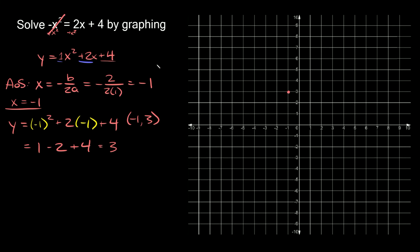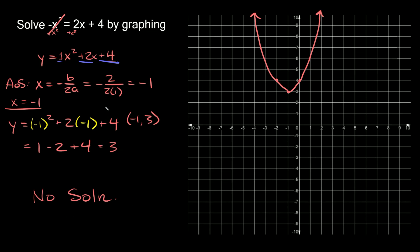We need two more points. We can pull the y-intercept — it's at positive 4, so that point is right there. To get a symmetrical point, go over 1 and up 1 on the other side. Connect the dots to draw the parabola. Now, remember the answers are wherever the parabola hits the x-axis. In this case, you can obviously see the parabola doesn't even touch the x-axis — it doesn't cross it anywhere. So there are no solutions. There's no number we could plug in for x that would give us a balanced equation.